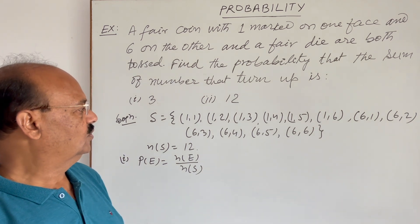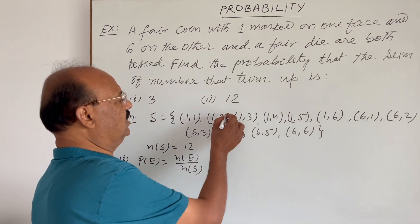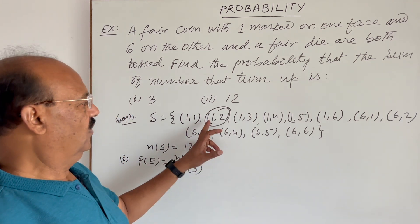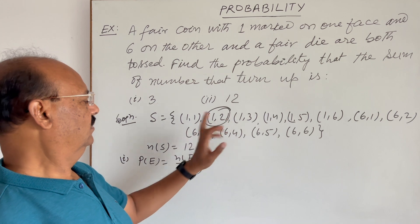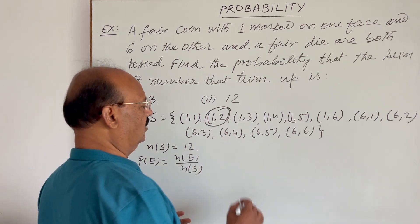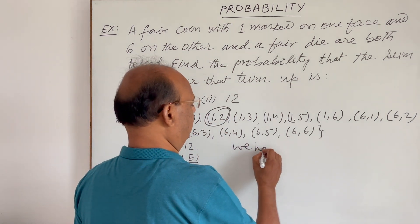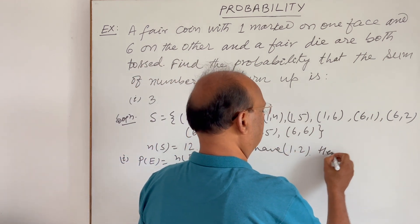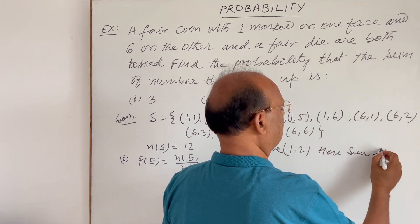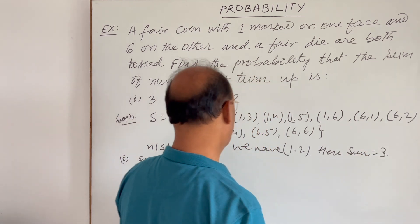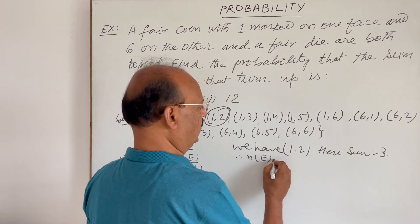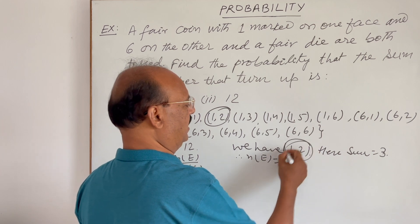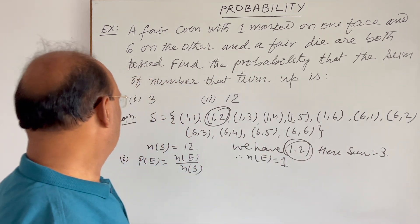So, where is the option? So, that sum of two outcomes is three, only this is the option. Isn't it? One plus two, that is three. So, we can write that we have one and two here, sum of these two numbers is three. So, this gives the value of n(E), means n(E) is equal to only one number we have, only one element we have, so n(E) is one.